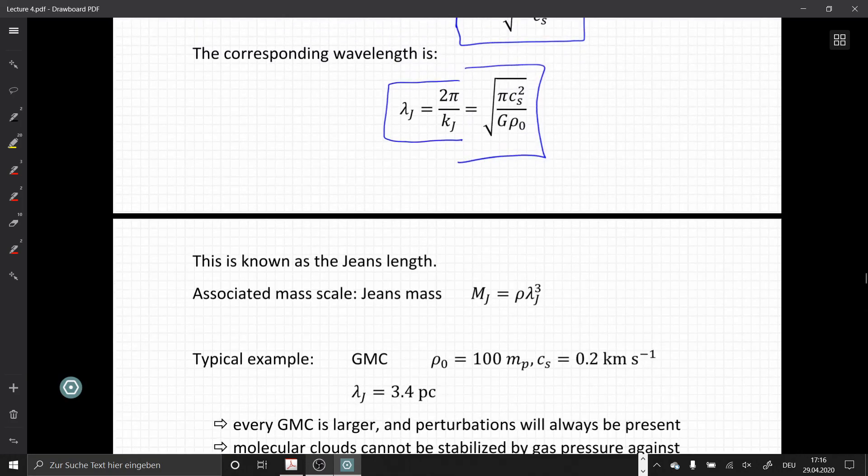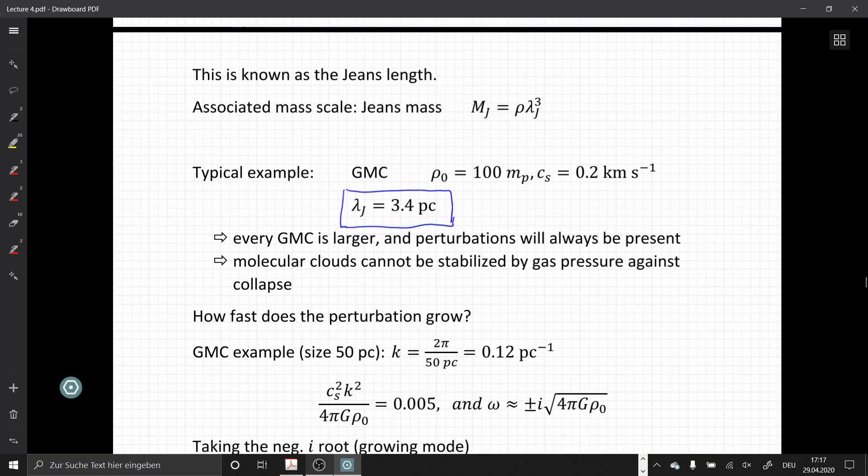Associated to this length scale, we can approximate a mass scale when we take the volume λJ³ times density. This corresponds to the mass over which a clump becomes gravitationally unstable. For a typical example, a giant molecular cloud with mean density 100 particles per cubic centimeter and sound speed 0.2 km/s, we get a Jeans length of 3.4 parsec. Every GMC is larger, and perturbations will always be present, so clouds cannot be stabilized by gas pressure against collapse.